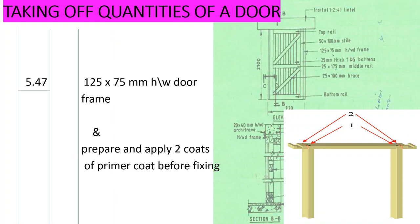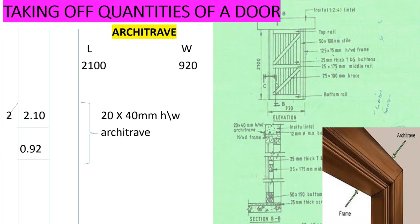So let's book that door. We book it in linear meter, that is 5.47, and then our size of the frame was 125 by 75. So I say 125 by 75 millimeters hardwood door frame, upper sun, prepare and apply three coats of primer before fixing. Of course you must paint your door frame before you fix it. That is how we get the quantity of the door frame.